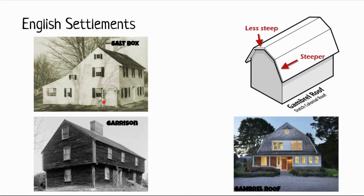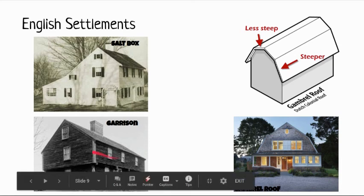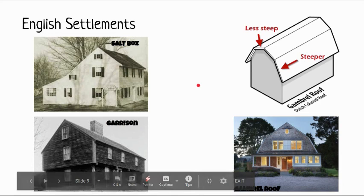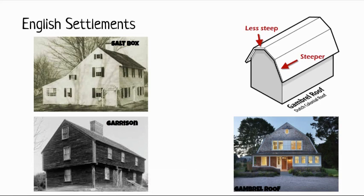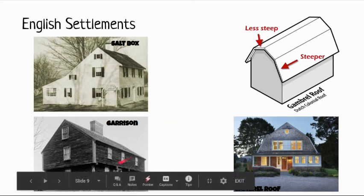The last style is called the garrison, where the second story overhangs the first story. It looks as though someone picked up a house, another house started falling out, and they restacked it unevenly. There's no major functional reason for this overhang — it was simply a popular design style of the time. We still see some of this today, though it's quieter and often mixed with other styles. That covers the early settlements and the original indigenous housing styles as they began to mesh together.